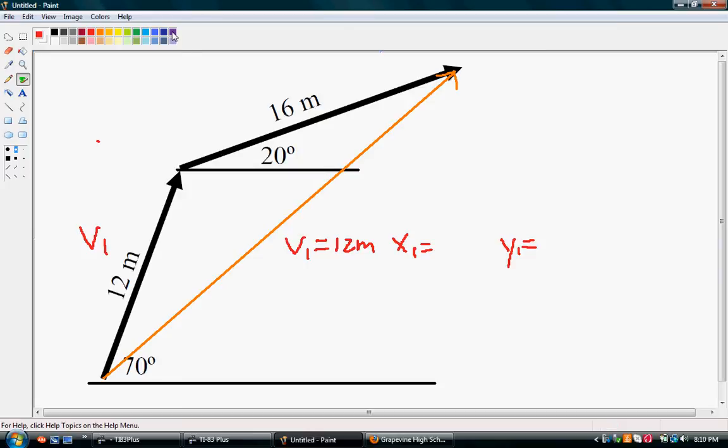Alright, then our second vector, we'll call this V2, also has a resulting magnitude. It is 16 meters, and it, just like the first one, has an x component, we'll call x2, which we don't know yet. And a y component, we'll call y2, which we do not know yet.